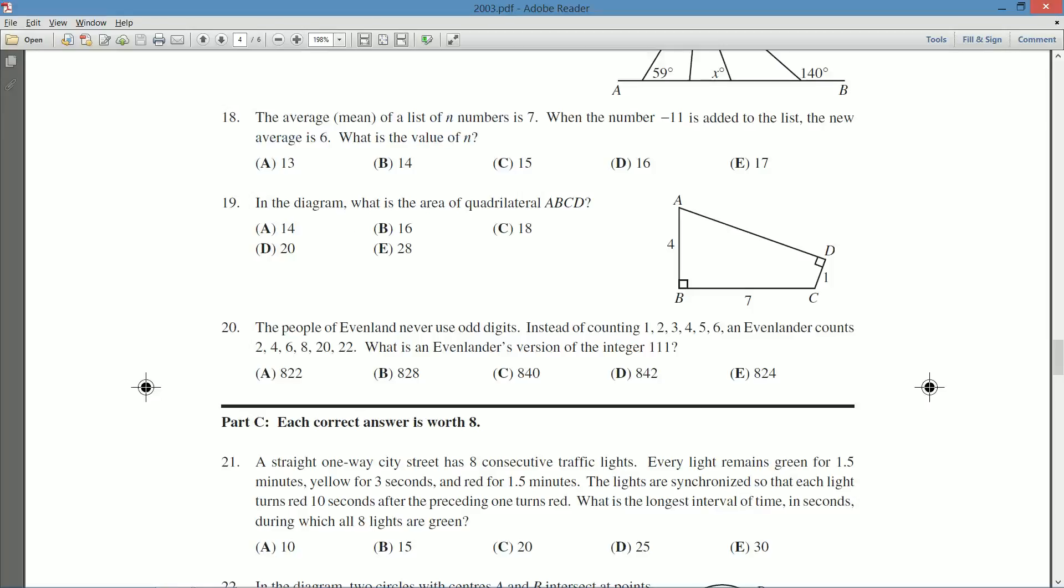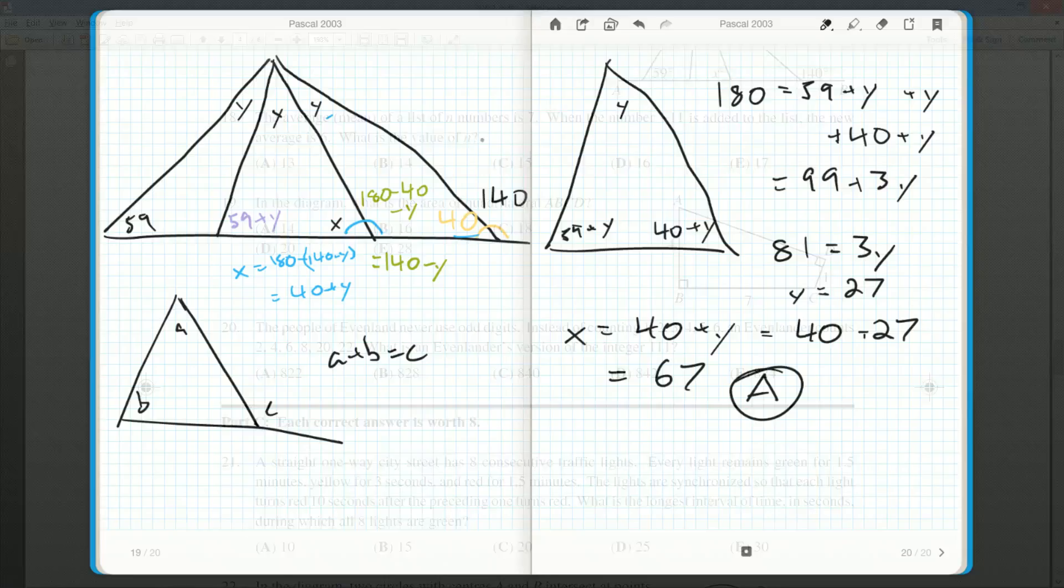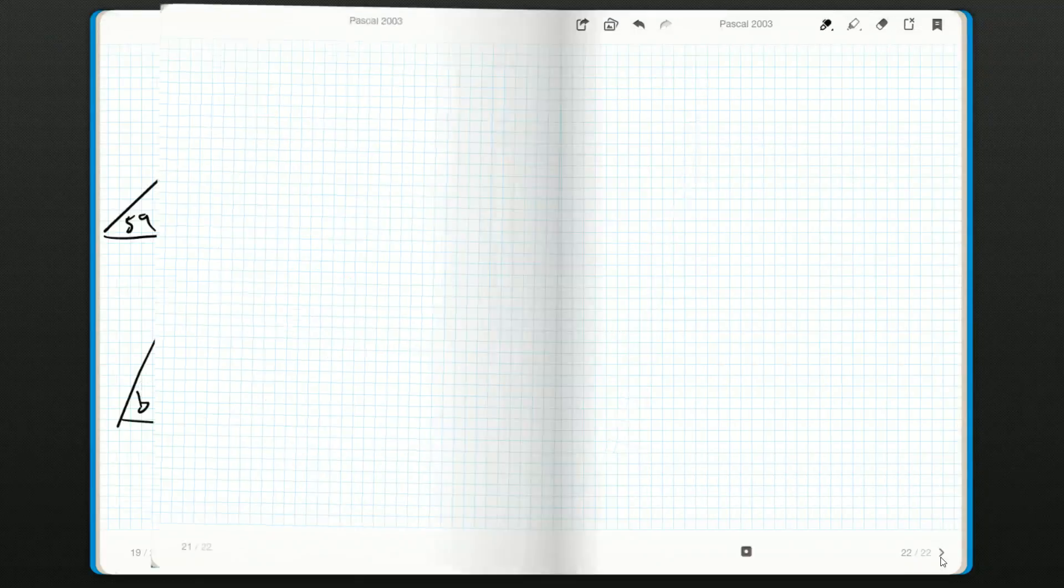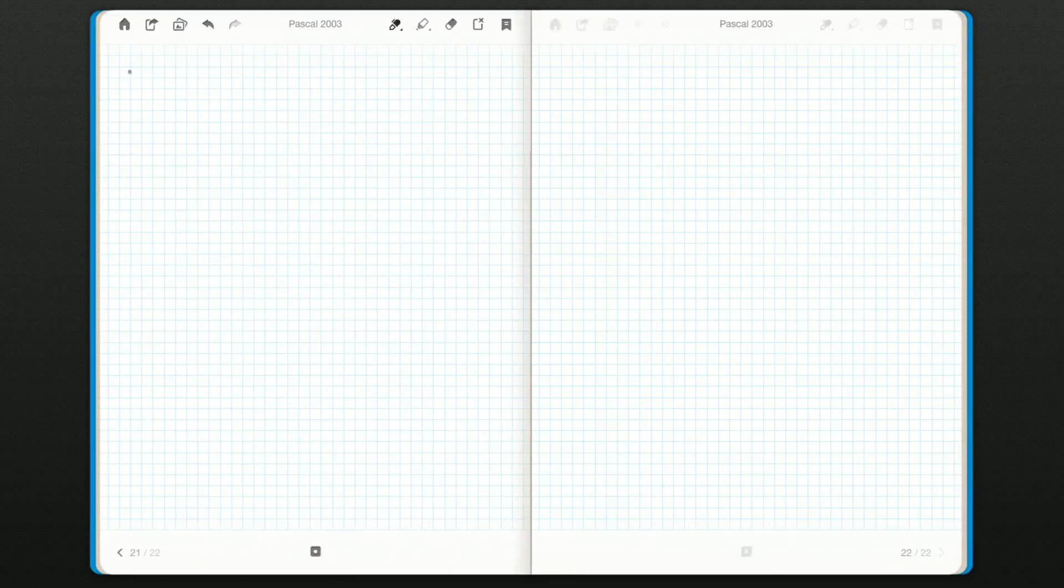Okay, so we're talking about some averages. Well it might be a good idea to remember how do we calculate average. Average is the total of all the numbers divided by how many numbers.